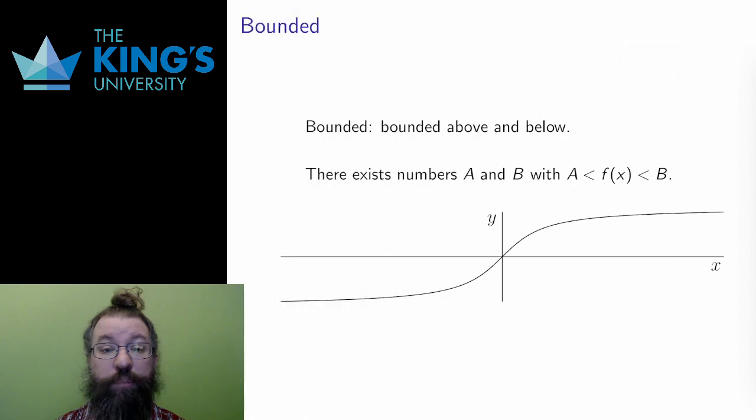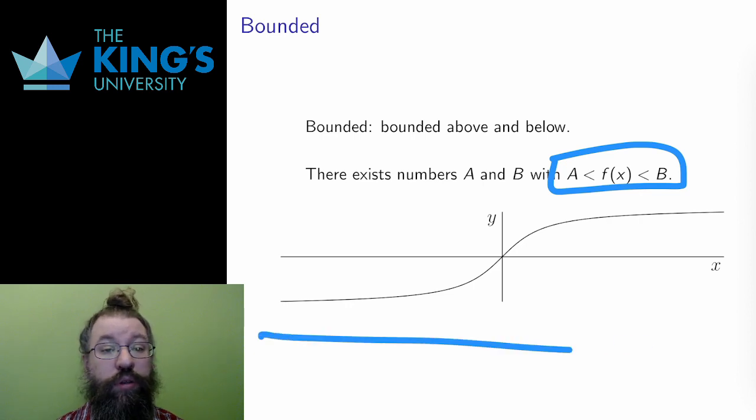If both are true, bounded above and below, then the function is simply called bounded. A bounded function always stays between two lines, one above and one below.